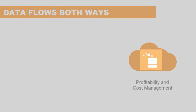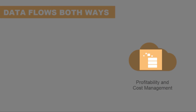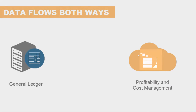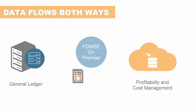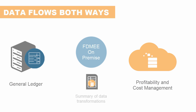The management reporting data you generate in Profitability and Cost Management must often be compared with actuals and written back to the general ledger. You can update your ledger by creating queries to extract a journal entry to a table that FDMEE can then write back to your ledger. For example, you may want to write back journal entries that are the summary of the transformations done in Profitability and Cost Management, so the general ledger has the same results.